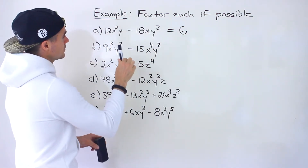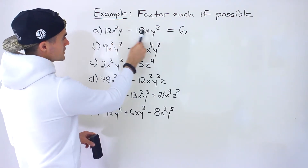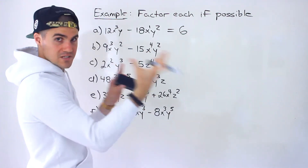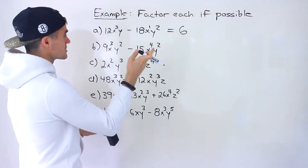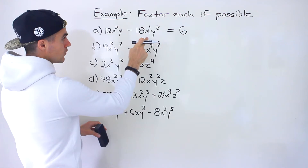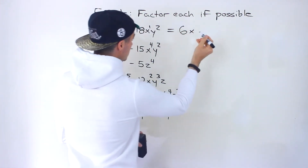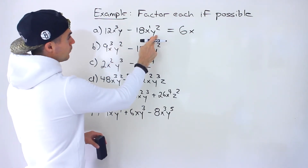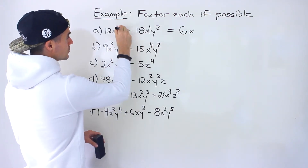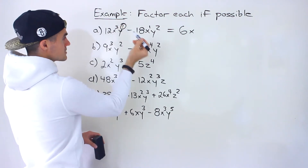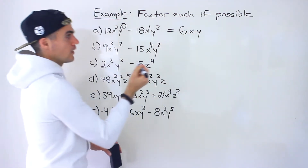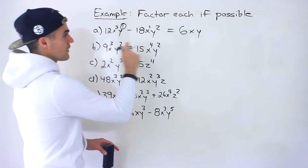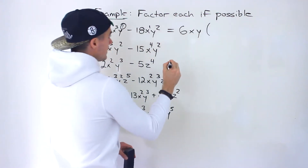Now let's look at the variables. Both expressions have an x, but we want to take out the variable to the lowest exponent. We've got x to the 3 and x to the 1 — 1 is the lower exponent, so we take out just x. Over here we have y and y squared — the lowest exponent is 1, so we take out y to the 1. So 6xy ends up being the greatest common factor.